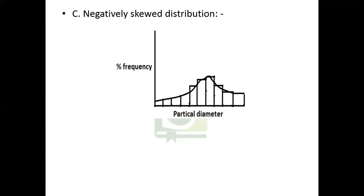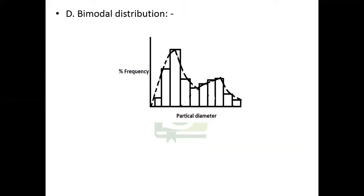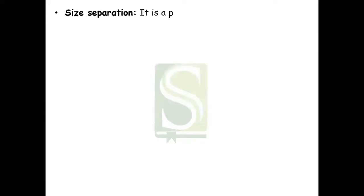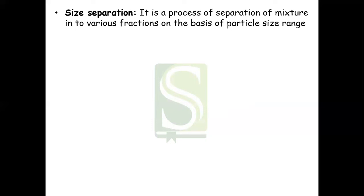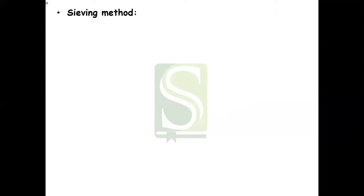Next is negatively skewed distribution. When the population of particles exhibits a frequency curve exactly opposite to that of the positively skewed, it is termed negatively skewed distribution. Next we have bimodal distribution curve — when more than one mode occurs in a plot of percent frequency versus particle diameter, that distribution is termed bimodal, giving two peaks or two modes. Size separation is a process of separating a mixture into various fractions on the basis of particle size range. Methods include sieving, sedimentation, elutriation, and cyclone separator.